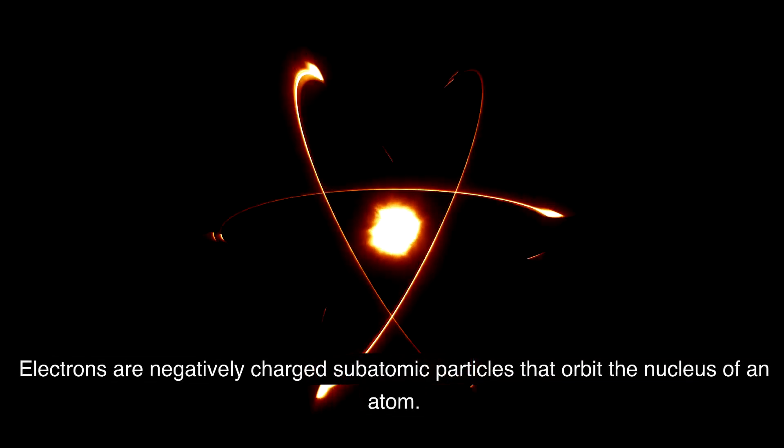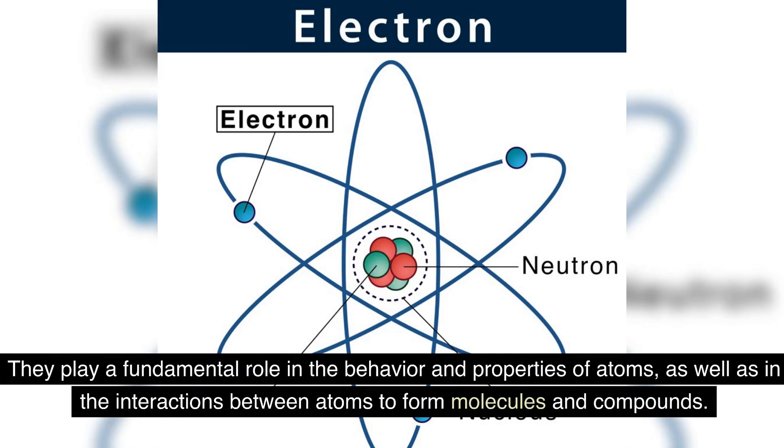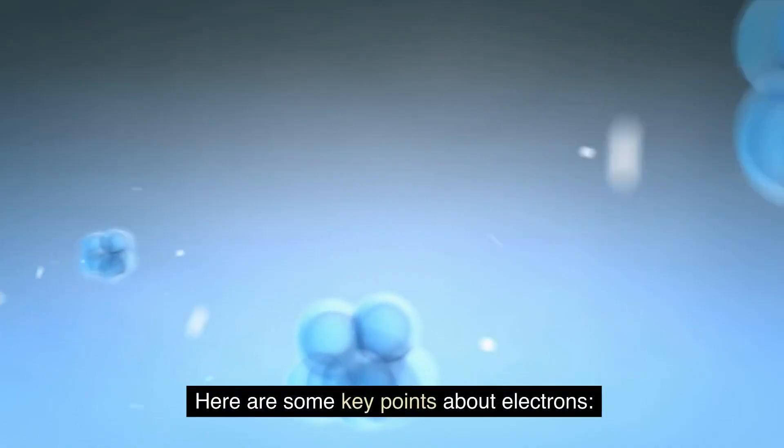Electrons are negatively charged subatomic particles that orbit the nucleus of an atom. They play a fundamental role in the behavior and properties of atoms, as well as in the interactions between atoms to form molecules and compounds. Here are some key points about electrons.